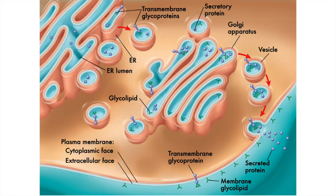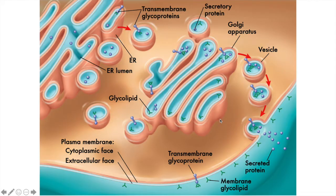Notice that these carbohydrate portions are attached. They are inside the lumen of the Golgi cisternae, just as they have been since the beginning of their synthesis in the lumen of the ER. On the trans face of the Golgi, vesicles transport the finished products to the plasma membrane. The vesicles turn themselves inside out to join the plasma membrane. Thus, the carbohydrate moiety of the glycoprotein ends up on the outside of the cell.